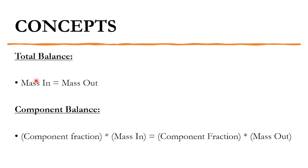Total balance: mass in should be equal to mass out — the law of conservation of mass. For component balance, the component fraction is associated with each mass stream. If there are multiple mass streams, the component fraction multiplied by the mass in equals the component fraction multiplied by the mass out.